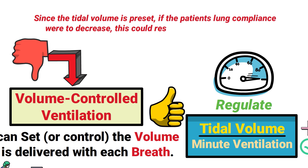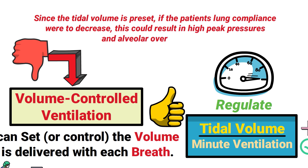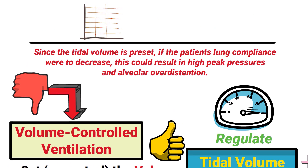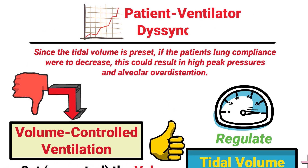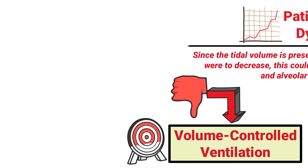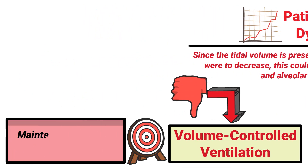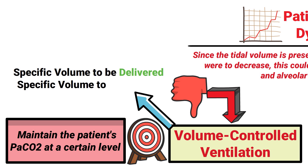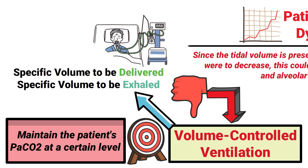Another drawback is an increased likelihood of patient-ventilator dyssynchrony. With that said, the main goal of volume controlled ventilation is to maintain the patient's PaCO2 at a certain level. It allows for a specific volume to be delivered and a specific volume to be exhaled, regardless of any changes in the patient's pulmonary characteristics or effort.